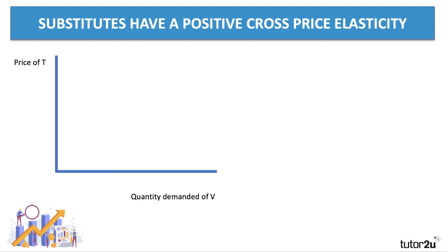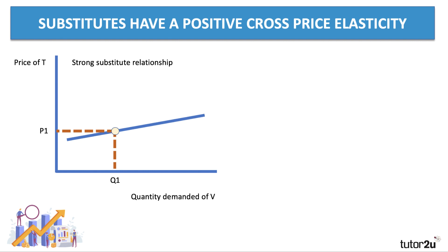We can visualize this in an XY space diagram. On the Y axis we have the price of T, and on the X axis the quantity demanded of good V, where T and V are substitutes. A steep curve would suggest a strong substitute relationship — a small increase in the price of T from P1 to P2 leads to a substantial increase in the quantity demanded of V.